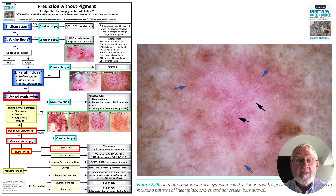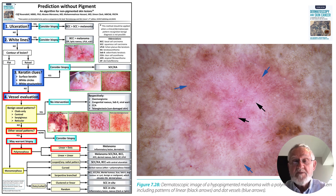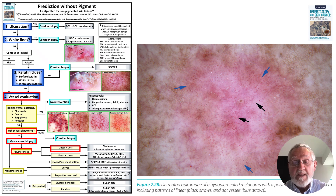Here is an example of a lesion with no ulceration, no white lines, and as a flat lesion the white clues are not relevant. It has a polymorphous vessel pattern with both linear vessels — indicated by black arrows — and dot vessels — indicated by blue arrows. This linear plus dots pattern points squarely to melanoma, which this is: melanoma in situ.